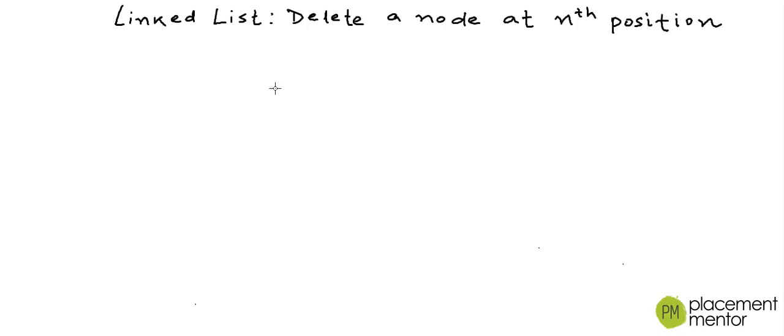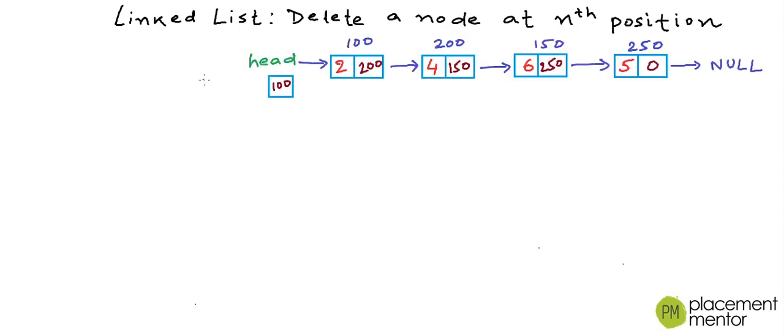In our previous lesson we wrote a program to insert a node at a given position in a linked list. Now in this lesson we will write a program to delete a node at any given position in a linked list.